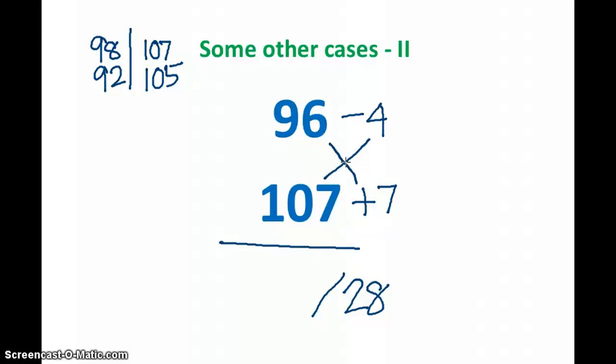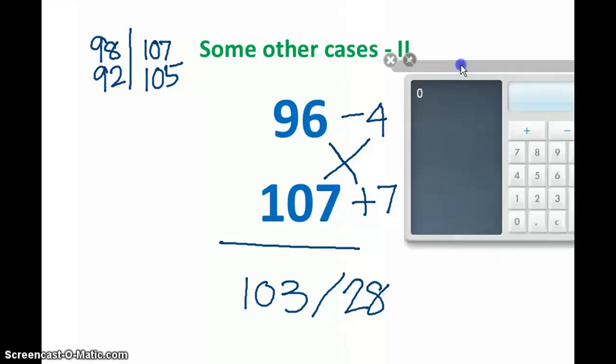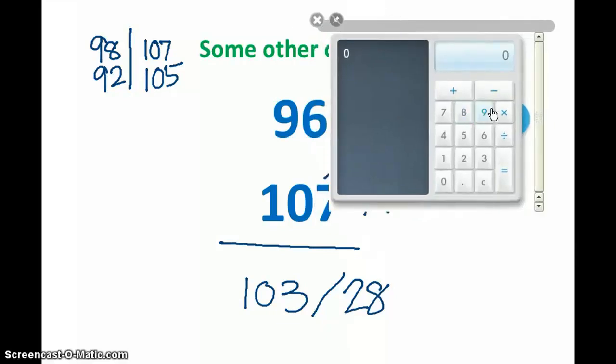So the answer is 10328. Let's check if the answer is that or not. 96 into 107. No, our answer is not correct. The answer is 10272.